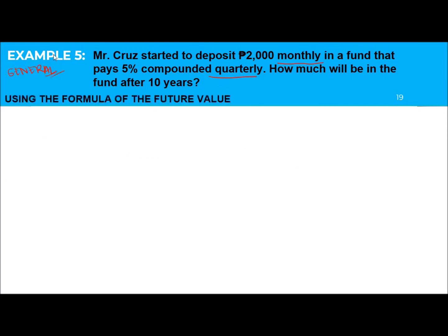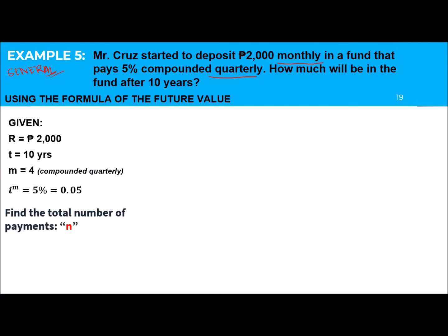Getting the given: R equals 2,000; T equals 10 years; the interest is compounded quarterly so M equals 4 for the interest period; interest rate is 5% or 0.05. For the total number of payments, focus on the payment frequency — he pays monthly so M equals 12 for payments; T equals 10; therefore N equals 12 times 10 equals 120. He makes 120 payments.